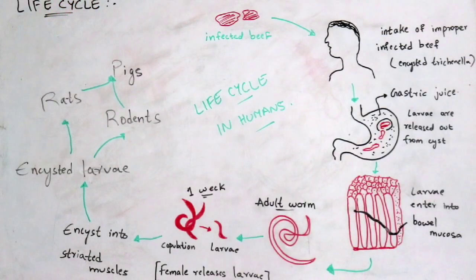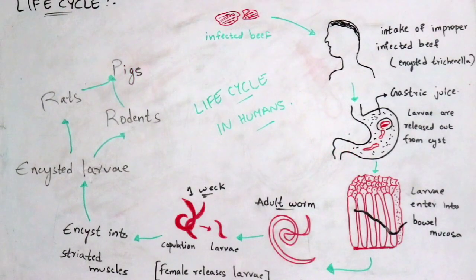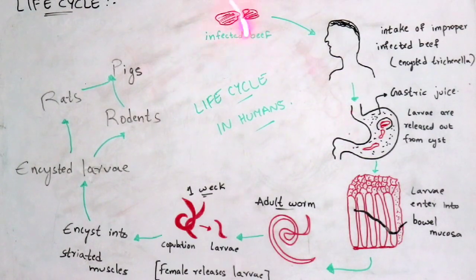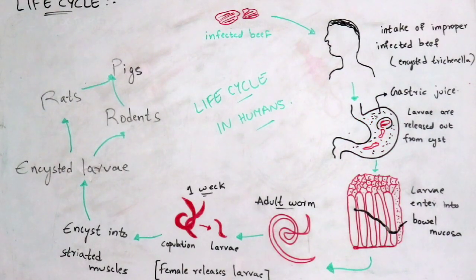The life cycle of Trichinella spiralis can be seen in pigs, rats, rodents, and humans. The life cycle in humans begins with the ingestion of infected beef or pork. This infected meat contains Trichinella cysts, and from the mouth it enters into the stomach.